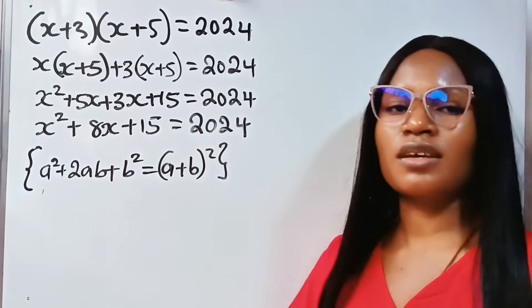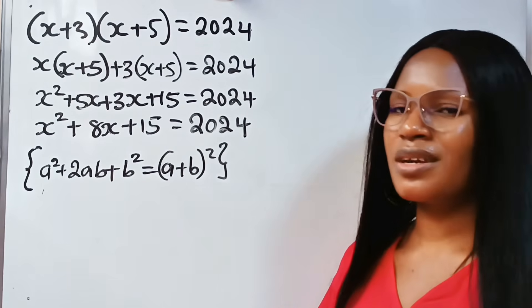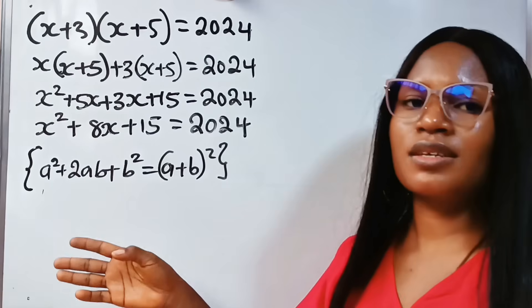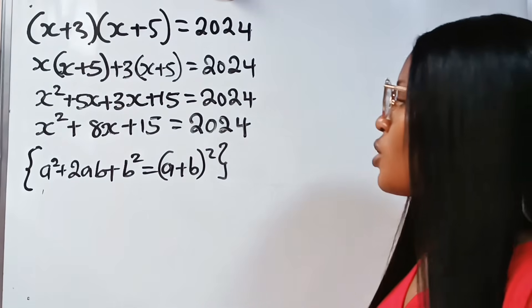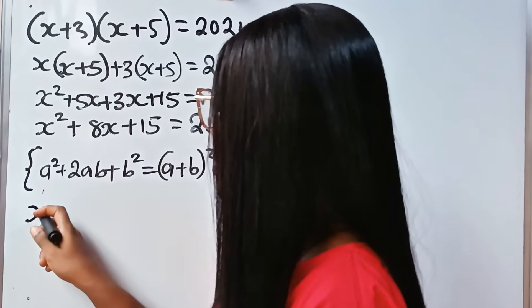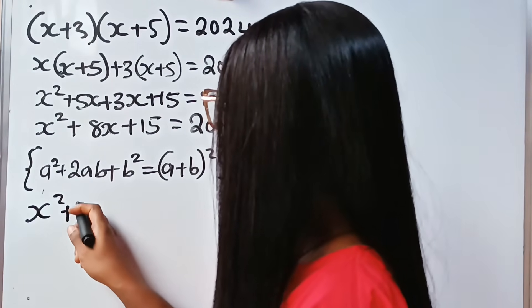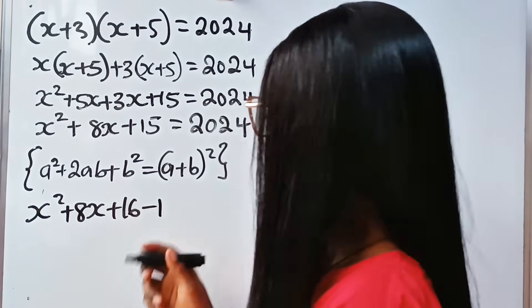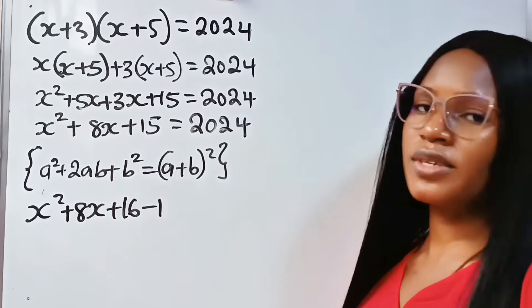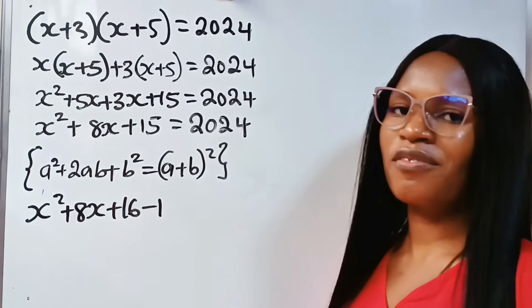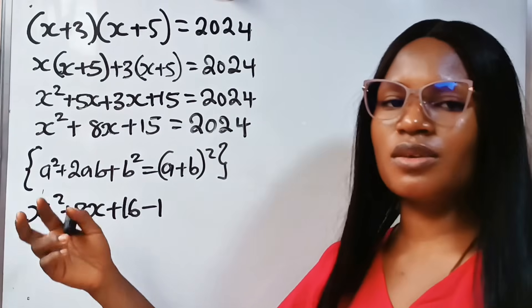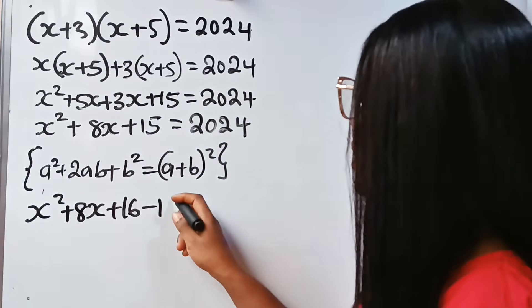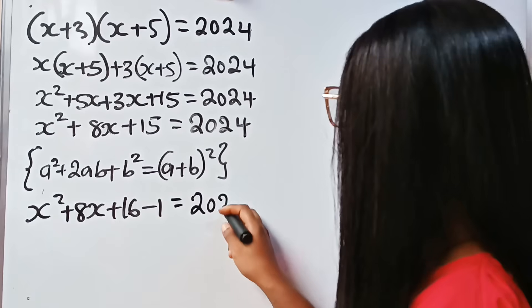You must balance it to maintain the equation. So the only way is if I write x² + 8x + 16 - 1, because 16 - 1 still gives 15. Now we've gotten what we wanted without changing the equation. This equals 2024.